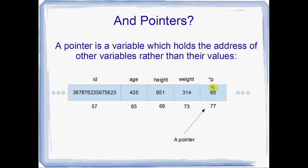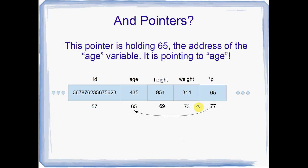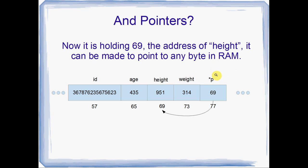And a pointer — here I've put a pointer on the end — is a variable that holds the address of another variable rather than its value. So right here I've got star p. The pointer itself has an address; in my example it happens to be at address 77. But the value in the pointer is 65, which means this is actually a pointer to age, because the address of age is 65. Or we could have 69 in our pointer — that would mean it's pointing to height, the variable at address number 69 in RAM.